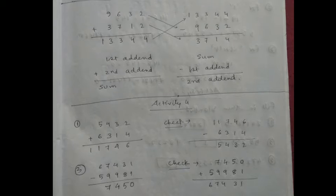For addition: 9,632 plus 3,712 is equal to 13,344. The first addend is 9,632 and the second addend is 3,712. The sum is the total of the first addend and second addend, which equals 13,344.